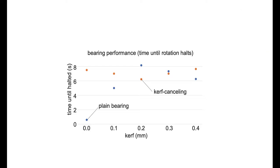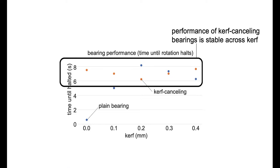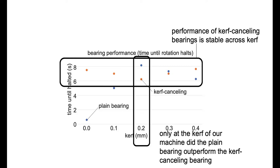When looking at the bearing performance, we see that the kerf canceling bearings are stable across variations in kerf. Only at the point where the kerf of our laser cutter is the same as the amount of kerf that we added to the model, does the plane bearing outperform the kerf canceling equivalent. Which makes sense, because this is a bearing that is optimized for the machine at hand.